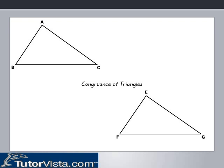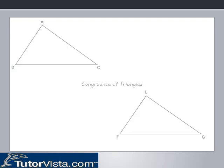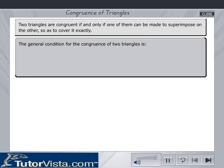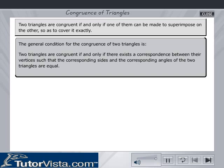Congruence of Triangles. Two triangles are congruent if and only if one of them can be made to superimpose on the other, so as to cover it exactly. The general condition for the congruence of two triangles is: two triangles are congruent if and only if there exists a correspondence between their vertices such that the corresponding sides and the corresponding angles of the two triangles are equal.